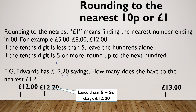If somebody had £14.47 and I wanted it to the nearest pound, this 4 is my important one. It would round to £14 because that's 4, which is 5 or below. So if it was £19.92, because the 9 is above 5, it would round to £20.